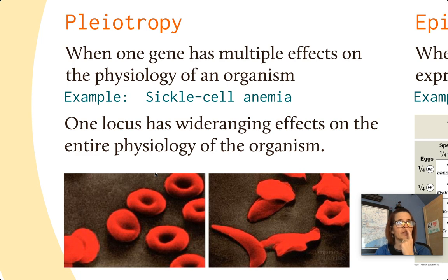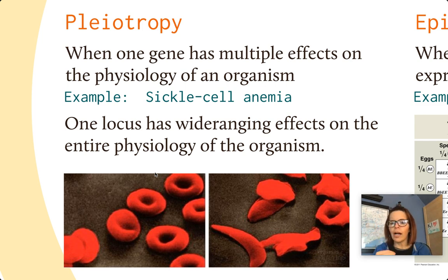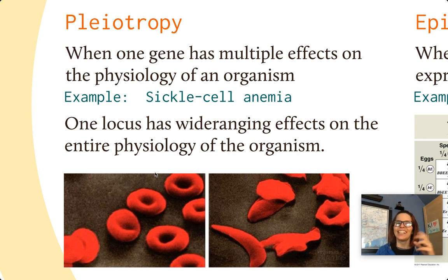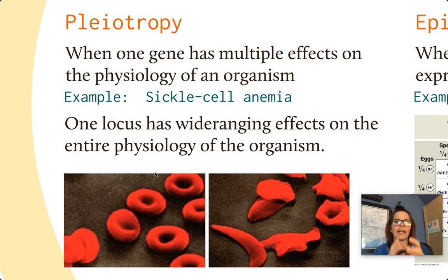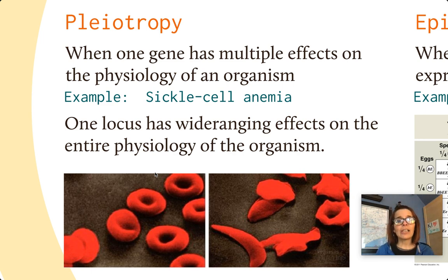Another example of pleiotropy is Down syndrome. We think of Down syndrome as impacting the central nervous system and leading to cognitive deficits, but it also leads to low-set ears, a larger tongue, heart defects, and hand anomalies. Those are all multiple effects from one particular genetic condition. An interesting analogy is the multiple effects of epinephrine — adrenaline can affect different tissues and receptors, producing several effects. It's a bit different, but it illustrates the idea.